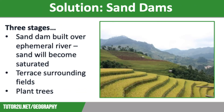Another strategy to reduce the risk of desertification is the use of sand dams, used by some communities in countries such as Kenya. There are three stages to this strategy. Firstly, a sand dam is built across an ephemeral river — one that is most often dry but flows briefly after rainfall — which causes sand to be deposited behind it. When the river has water in it, the sand becomes saturated and people can dig down into the sand to find water for several months after the river has stopped flowing.